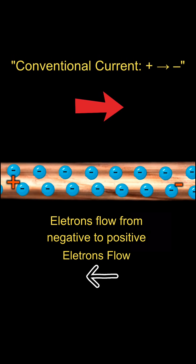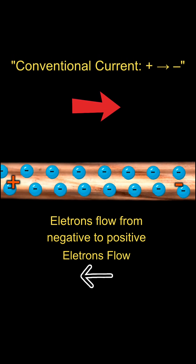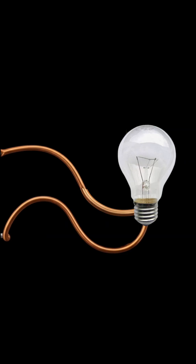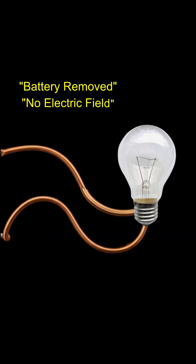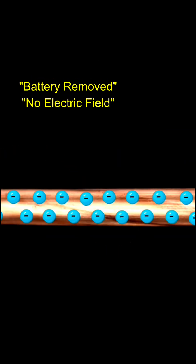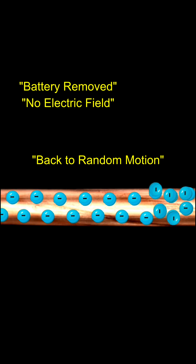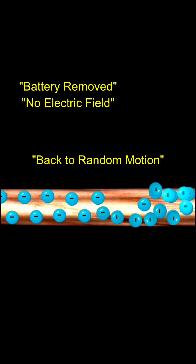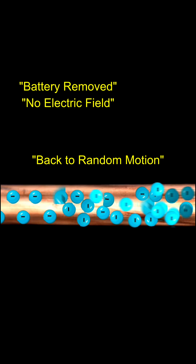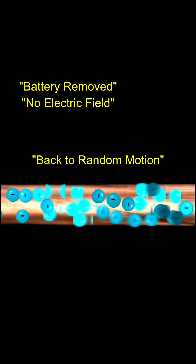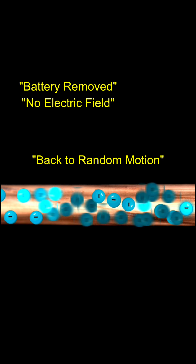In reality, electrons move from the negative terminal to the positive terminal. But by historical convention, electrical current was defined as flowing from positive to negative. If we disconnect the battery, the electrical field disappears and the drift stops. The electrons return to pure random thermal motion and current no longer flows.